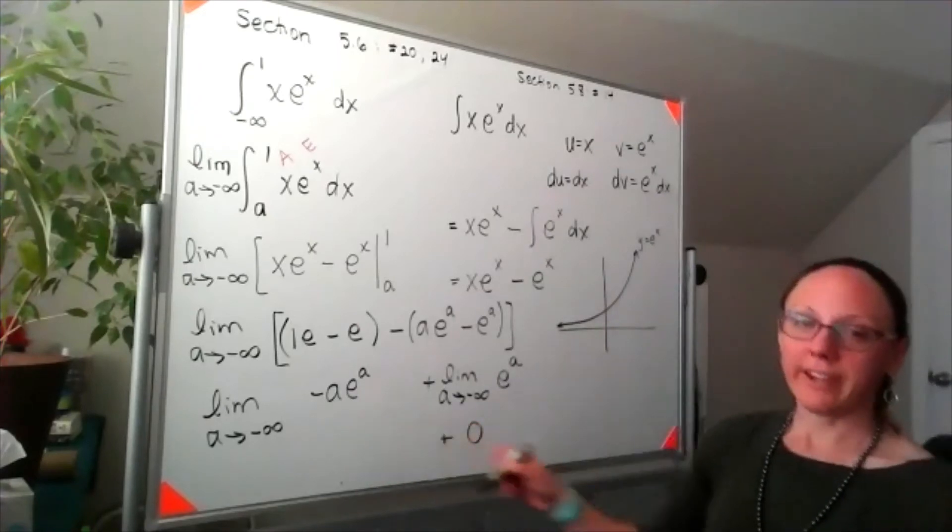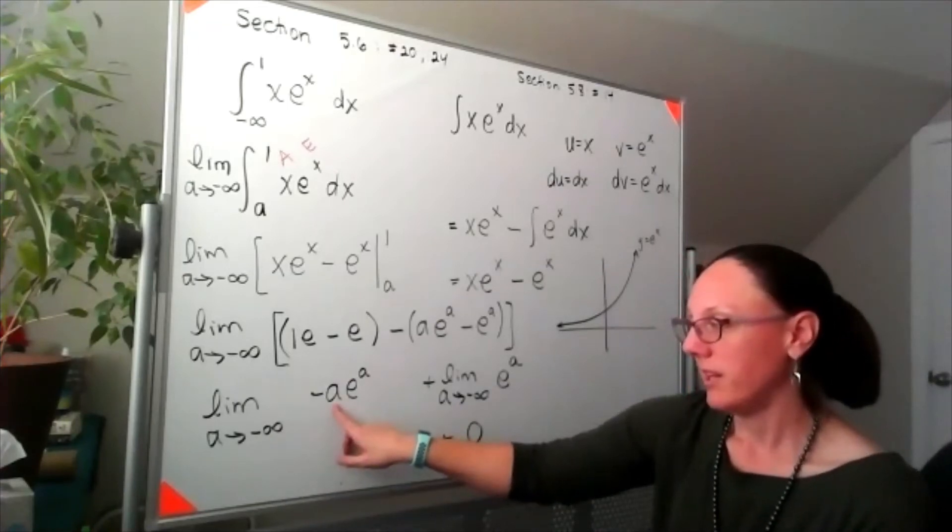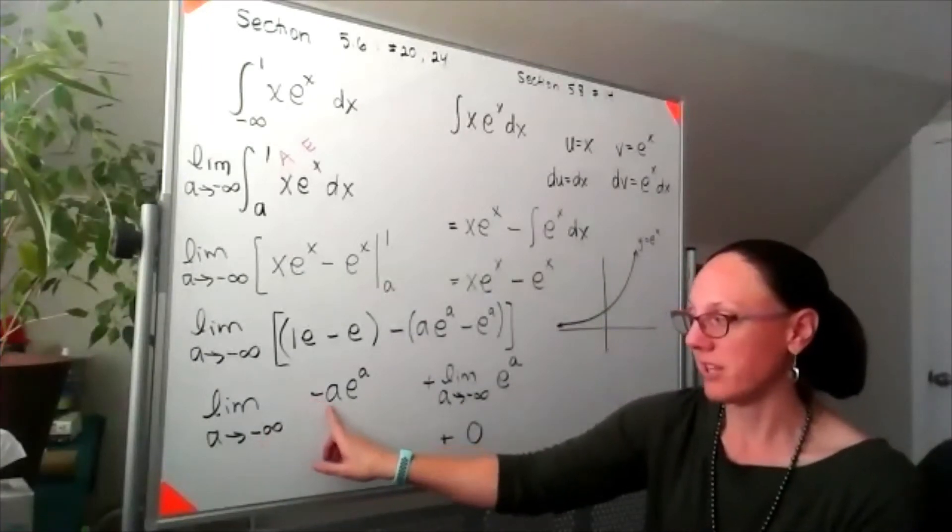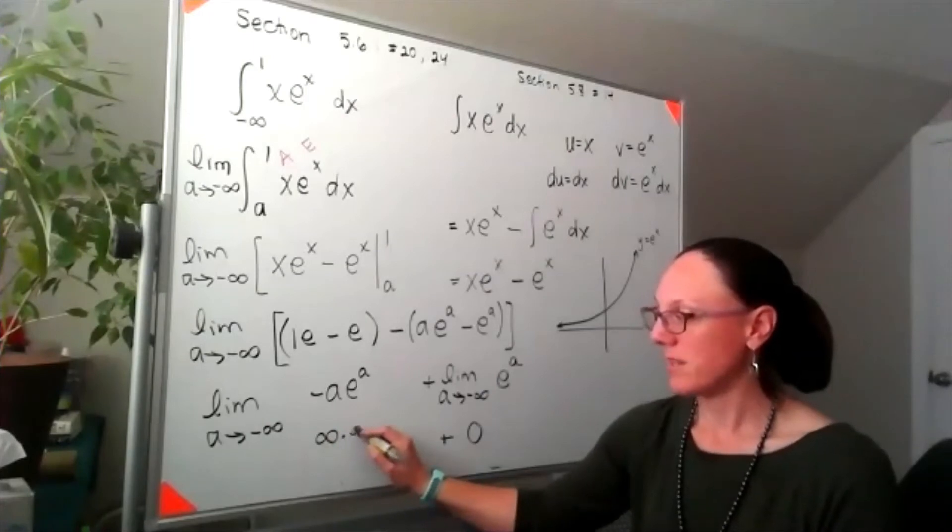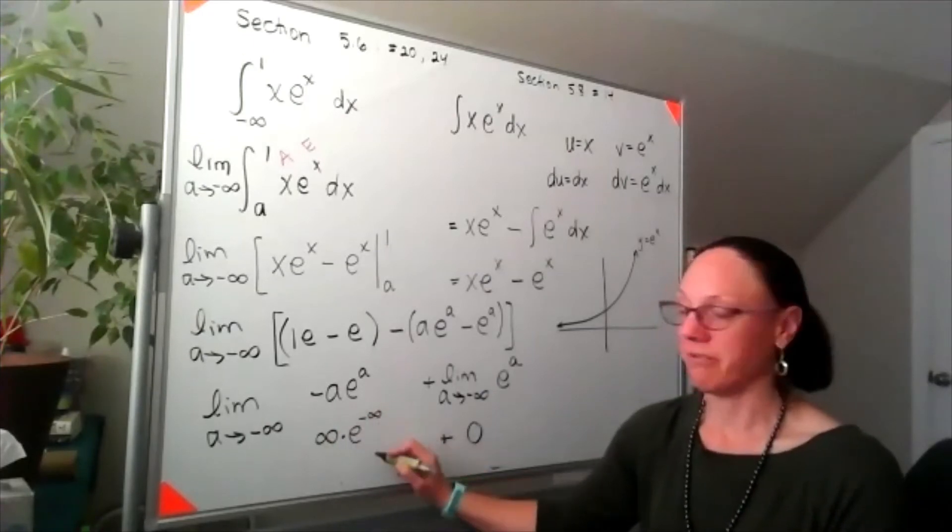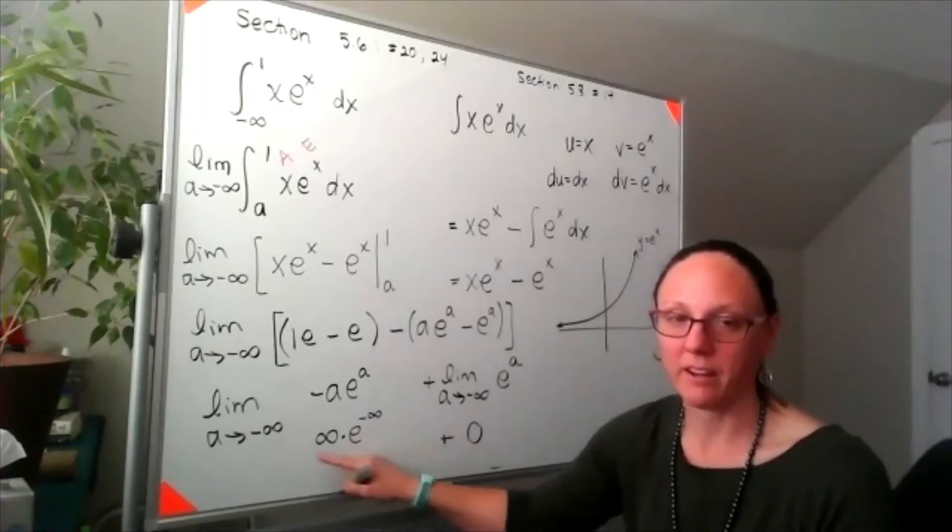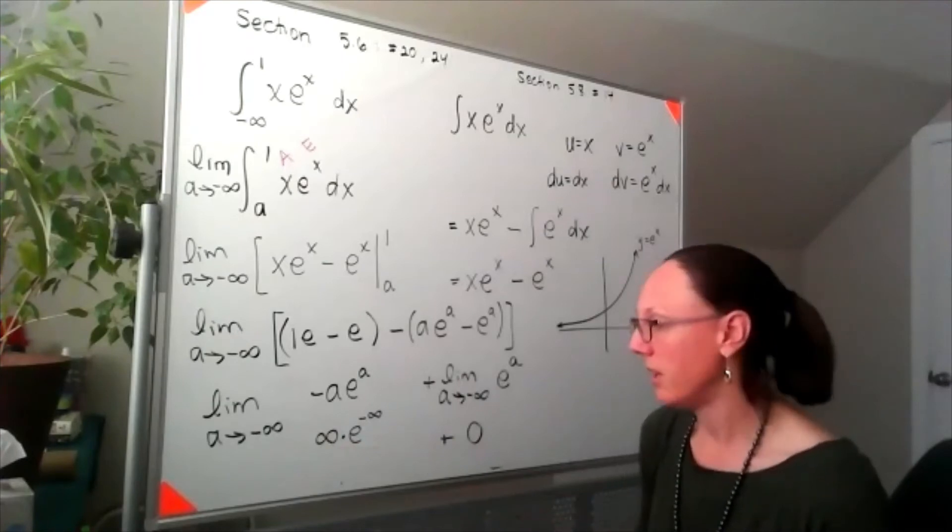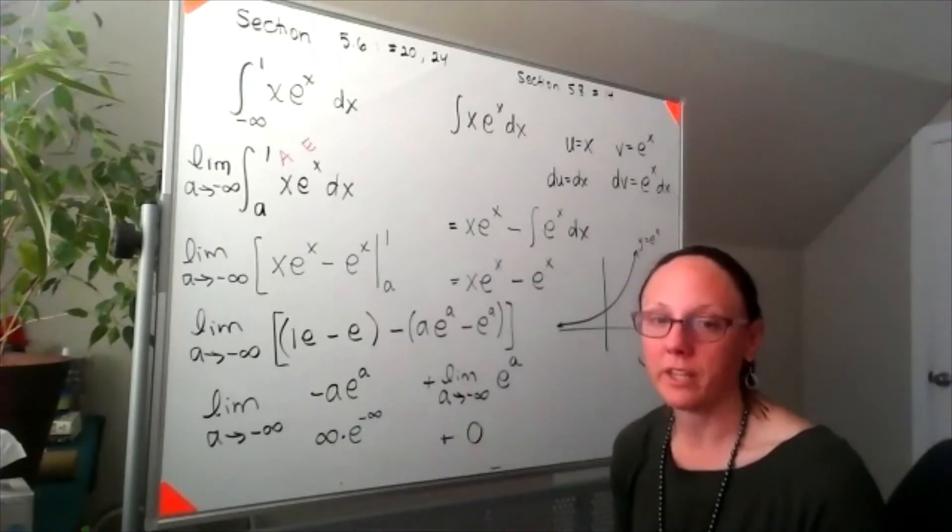This limit over here, if I put in the negative infinity right now, then it's like I'm saying I've got negative times negative infinity times e to the negative infinity. But we already know that e to the negative infinity is going to zero, and infinity times zero is one of our indeterminate forms. It's not an indeterminate form that we can use L'Hôpital's directly on, so we'll have to manipulate it before we can use L'Hôpital's.